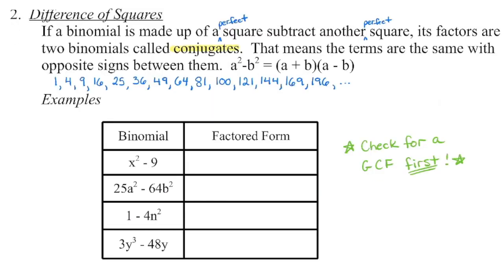Always check for your greatest common factor first. Because we're mostly going to be dealing with binomials this year, the other thing we can check for is a difference of squares. If so, we're going to factor them as conjugates. Remember these are your perfect squares — if we see those numbers with a subtraction sign between them, we're going to set up our conjugates. In the first example, we are subtracting the two terms: 9 is a perfect square, 1 is a perfect square, and x squared is a perfect square. So we've got two perfect squares with a subtraction sign in the middle, and we're going to set up our conjugates.